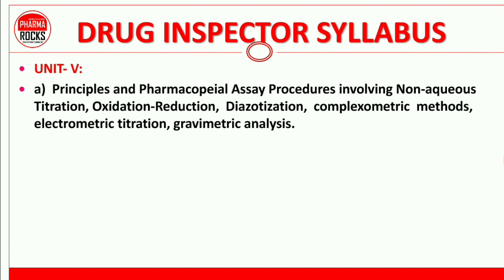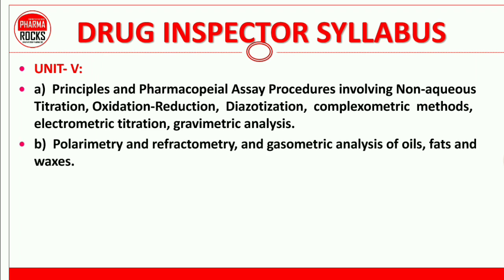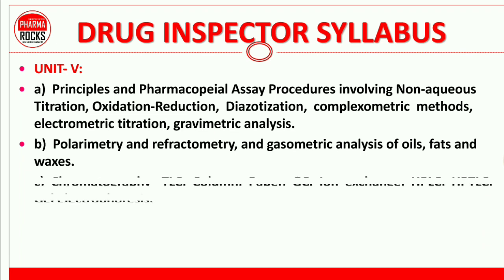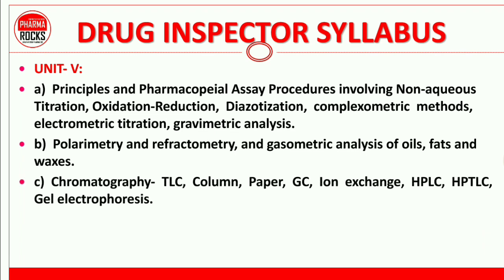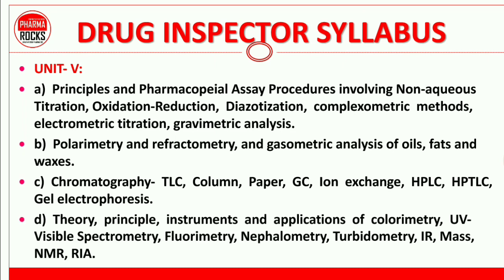Unit 5 covers pharmaceutical analysis: principles and pharmacopoeial assay procedures including non-aqueous titration, oxidation-reduction titration, diazotization, complexometric methods, electrometric titration, and gravimetric analysis. Also study polarometry, reflectometry, gasometric analysis, chromatography techniques — TLC, column, paper chromatography, GC, ion exchange — and theory, principles, instruments, and applications of UV-visible spectroscopy, fluorimetry, nephelometry, turbidimetry, IR, mass, NMR, and radioimmunoassay (RIA).